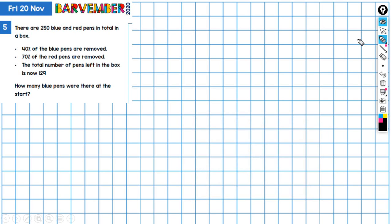There are 250 blue and red pens in total in a box. We're told that 40% of the blue pens are removed and 70% of the red pens are removed, and the total number of pens left in the box is now 129.